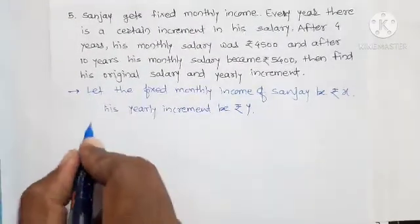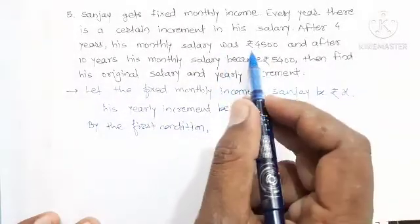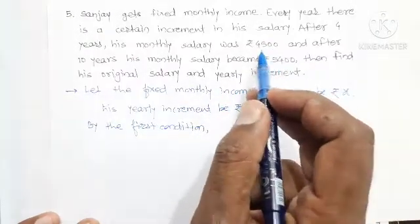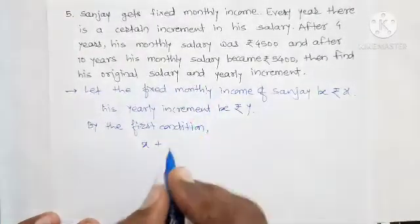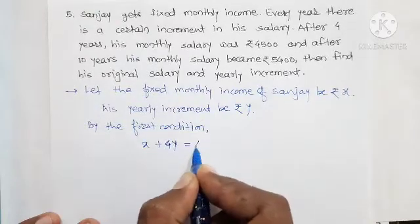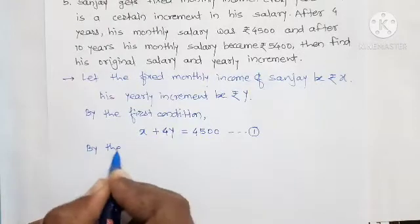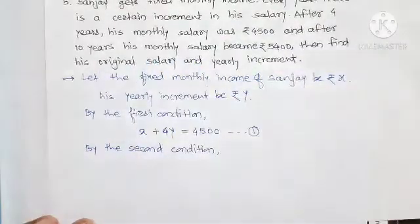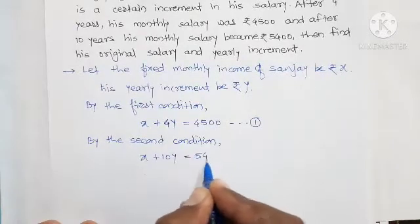By the first condition, after 4 years his salary is Rs. 4,500. His fixed income plus 4 increments equals 4,500, so x plus 4y equals 4,500. By the second condition, after 10 years his monthly salary became Rs. 5,400. Therefore x plus 10y equals 5,400.